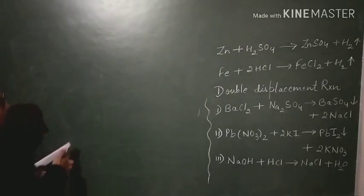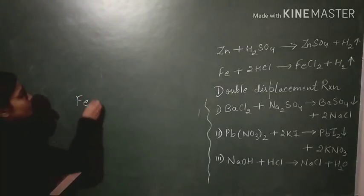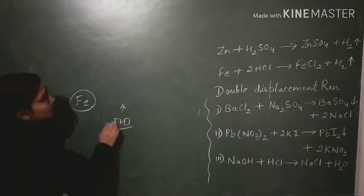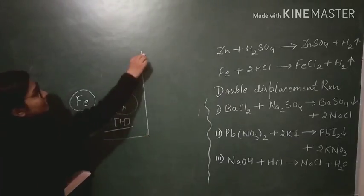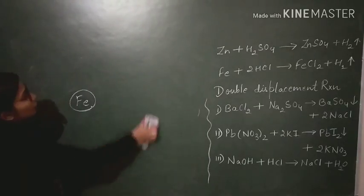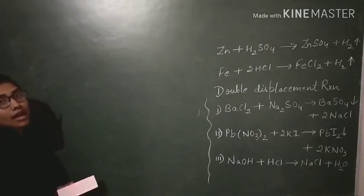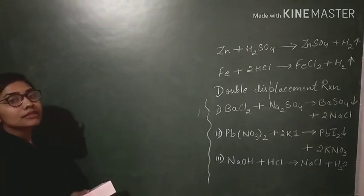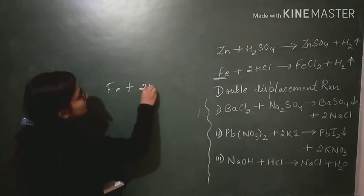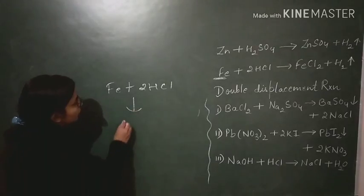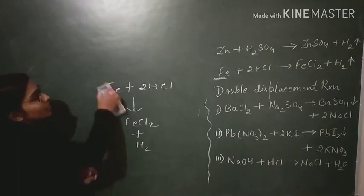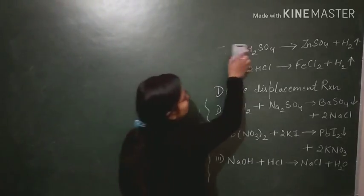Iron is also present above hydrogen in the activity series. So iron can also displace hydrogen from dilute acid solutions. For example, Fe plus 2HCl gives FeCl2 plus H2. These are examples of displacement reactions where metals above hydrogen displace it from dilute acids.